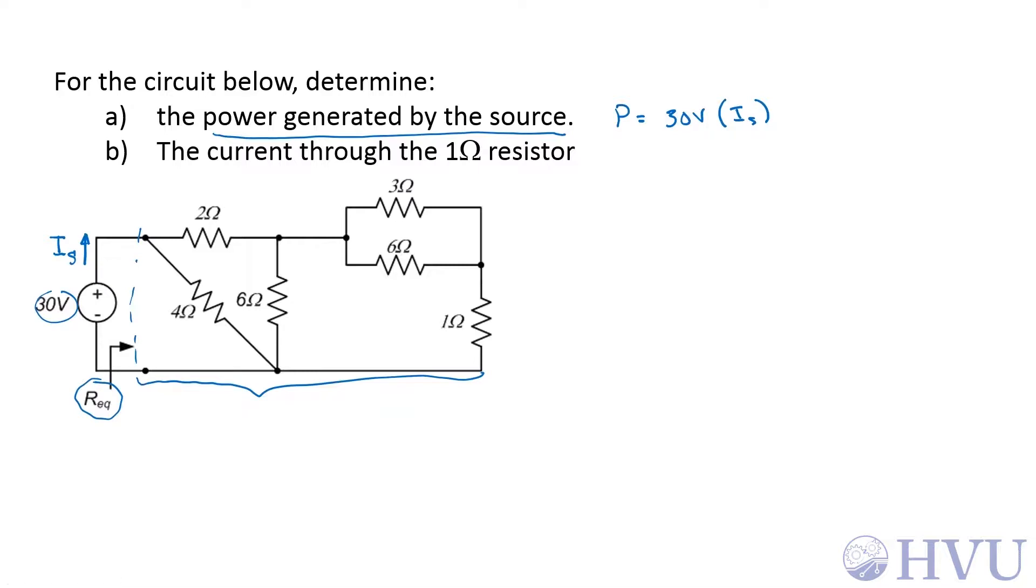Start looking for parallel and series combinations of elements. These two are in parallel, so their equivalent resistance is the product of the two: 3 ohms times 6 ohms over 3 ohms plus 6 ohms, which is 2 ohms.